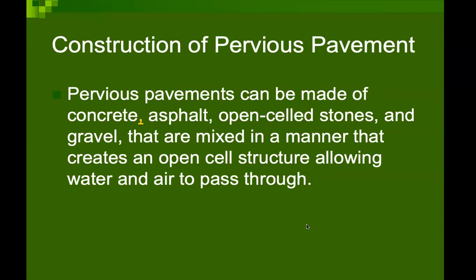Construction of pervious paving: pervious pavings can be made of concrete, asphalt, open-celled stones, or gravels that are mixed in a manner that creates an open-celled structure allowing water and air to pass through. This helps in reducing the runoff of water and lets the water percolate to the ground.